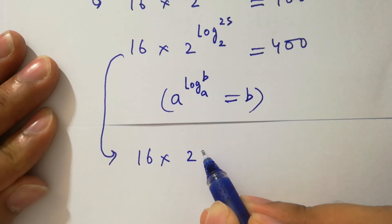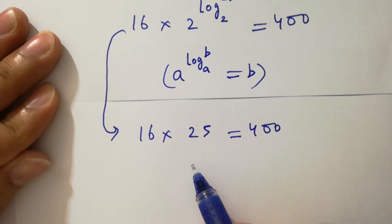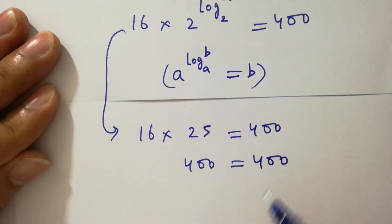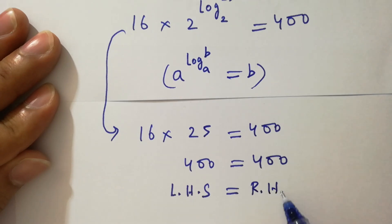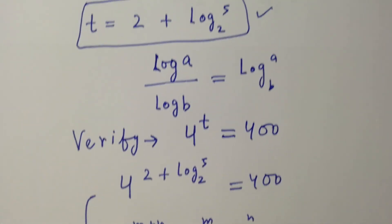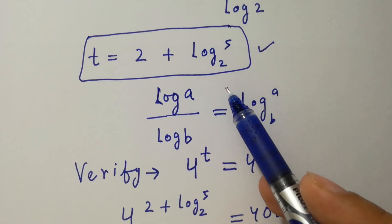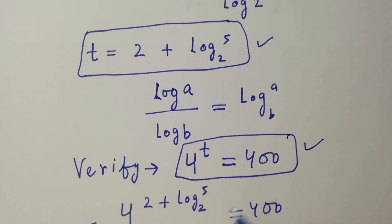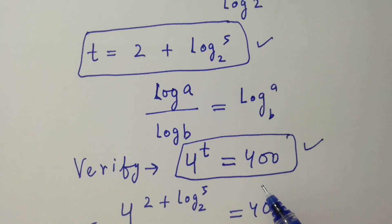16 times 25 is 400, equal to 400. You can see left hand side equals right hand side, which shows that the value of t equals 2 plus log 5 to the base 2 satisfies the equation 4 to the power t equals 400. Thanks for watching this video. Please subscribe to this channel to get notifications of my new videos. Okay, bye.